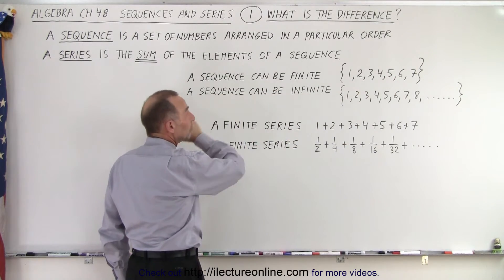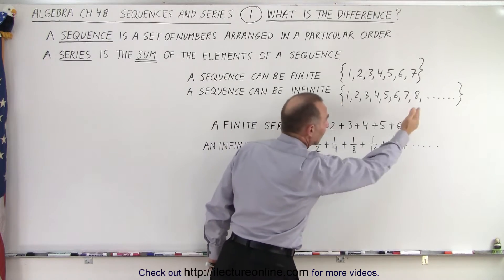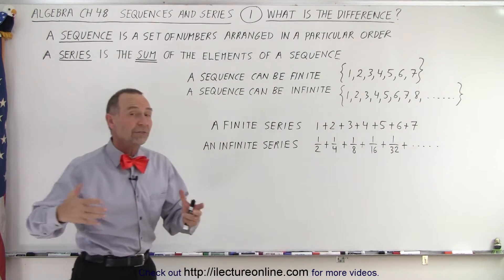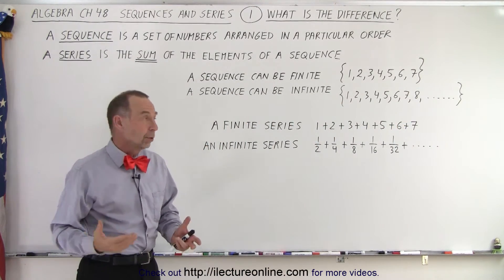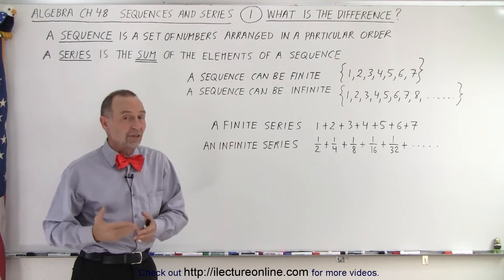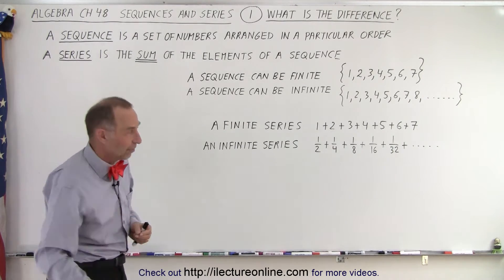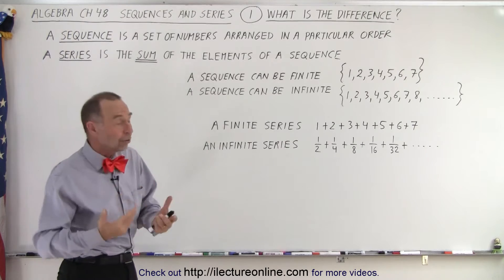But we can have an infinite sequence, and then you can see that there's no end. For example, all the positive integers beyond zero would be an infinite sequence, an infinite set of numbers that never ends.